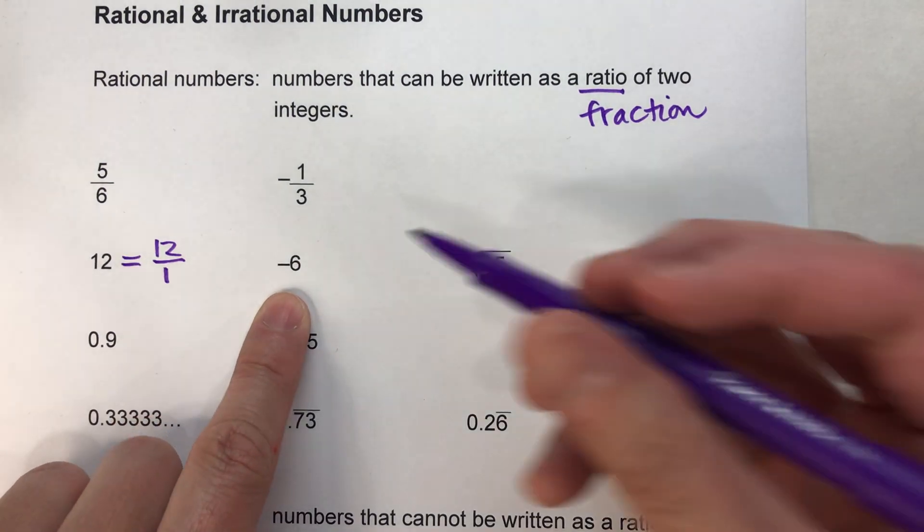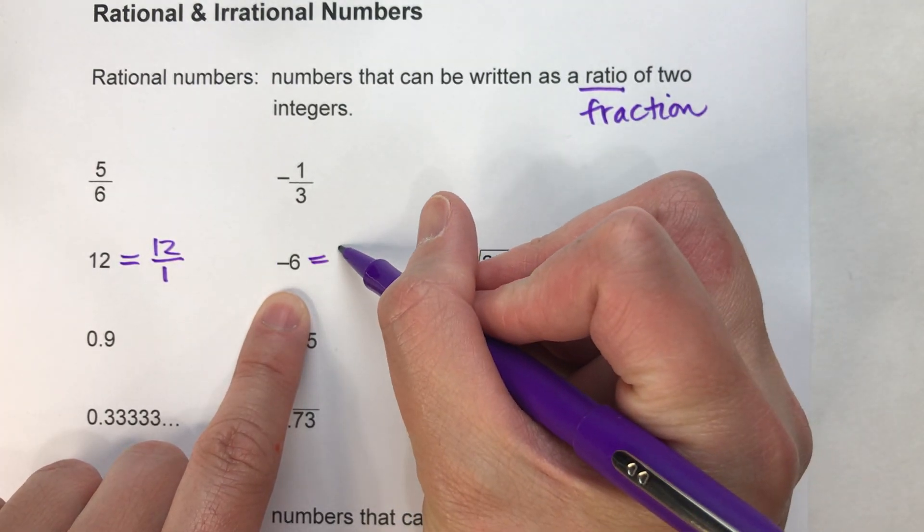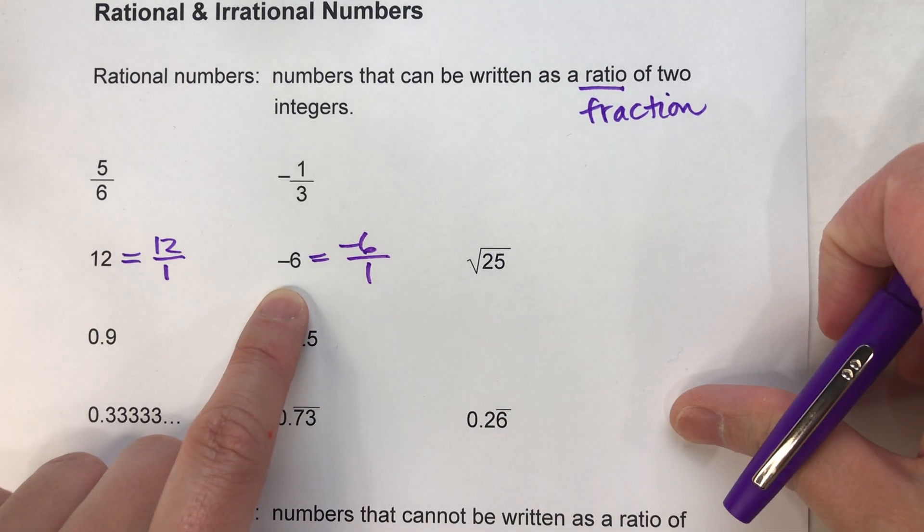Same with negative whole numbers. Negative 6 would be -6/1, so it's rational.